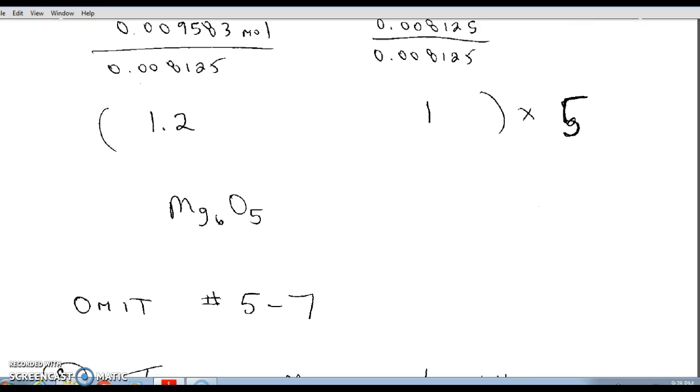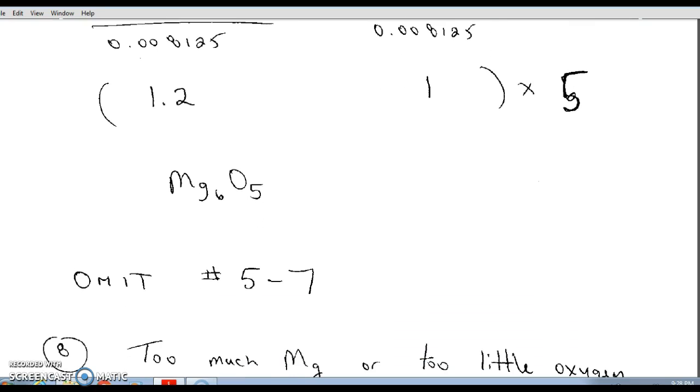We're going to omit 5 through 7 in these calculations for now. The idea of theoretical yield and percent yield and writing balanced chemical equations is something we're going to be doing a little farther in the future, so I'm just going to omit those for now.